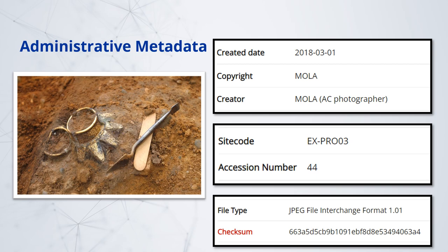Administrative metadata covers all of the information required to manage your resource for continued access. It is about managing and recording the process a digital object goes through throughout its lifecycle, from planning for its creation through to hopefully its continued and ongoing reuse. It is the information necessary both for trust in the data and also to provide for its ongoing preservation. Administrative metadata often captures the context necessary to understand digital resources such as the creation and/or acquisition of the data, rights management, and deposition within an archive.